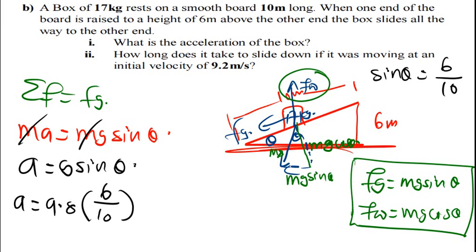So, if I get, what would be the answer there? 6 divided by 10 times 9.8. So, the acceleration is 5.88 meters per second squared. As simple as that.